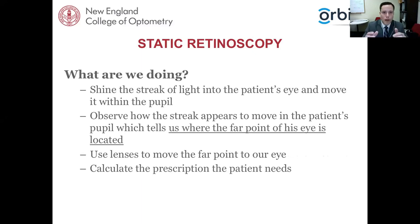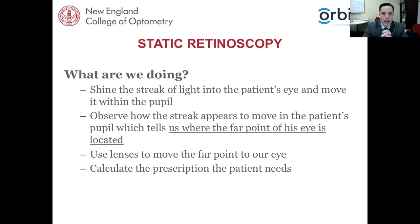In static retinoscopy, we shine the streak of light into the patient's eyes and move it within the pupil. We observe how the streak appears to move in the patient's pupil, which tells us where the far point of that eye is located — whether between me and the patient, virtually behind the patient, or right at my entrance pupil. Based on that, I determine the prescription by using lenses to move the far point to my entrance pupil.